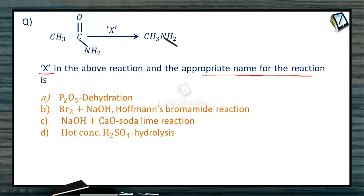When we observe the starting material and product, acetamide becoming methylamine, the CO group is lost. So this is an amide to amine conversion.